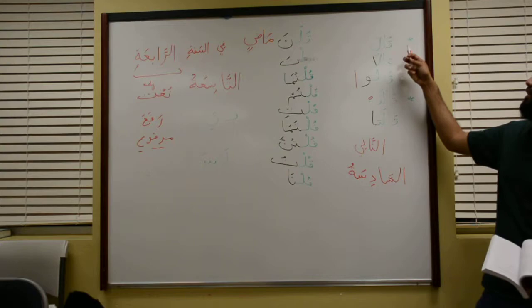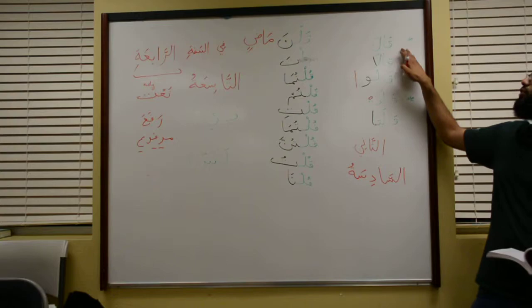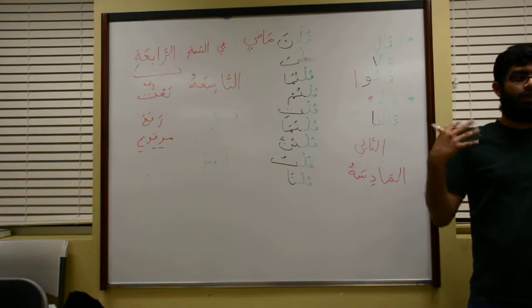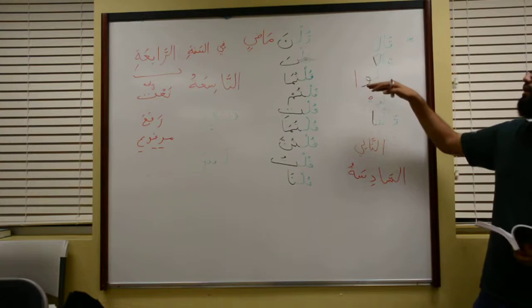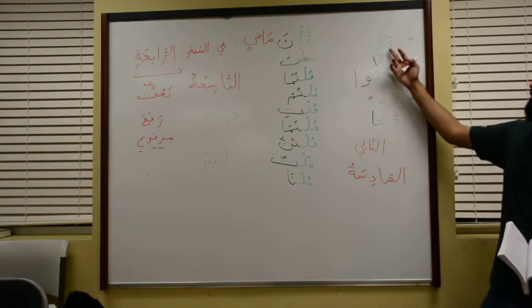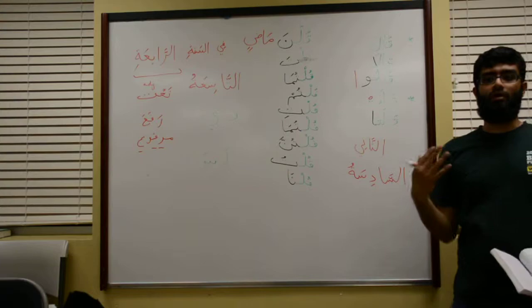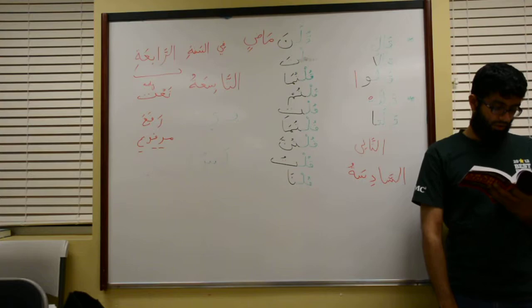The subject is hidden for qala — it's hidden. If you put a name like Bilal or Khalid, it becomes visible. So qala alhamdulillah means he said alhamdulillah, with a hidden subject. But qala Ibrahim alhamdulillah has a visible subject — Ibrahim is there.